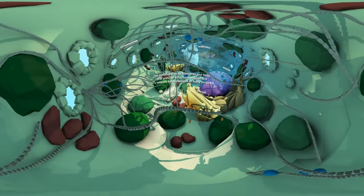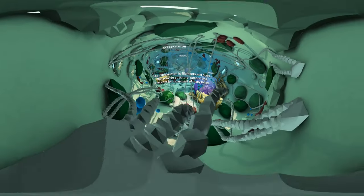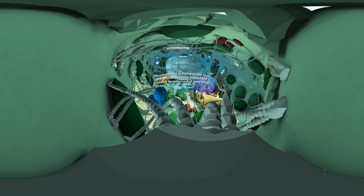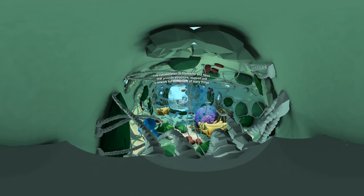The cytoskeleton, or cell skeleton, is a web of many filaments and fibers that crisscross the internal space of a cell, providing both structure and support, and creating a network of highways along which many things inside of the cell can travel.